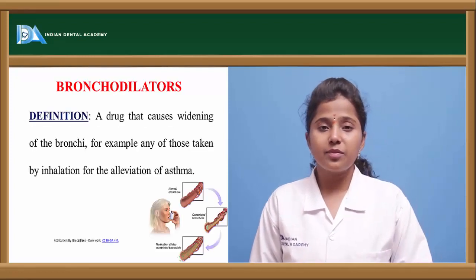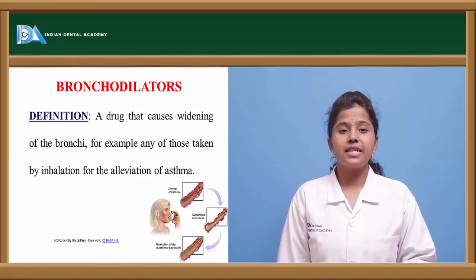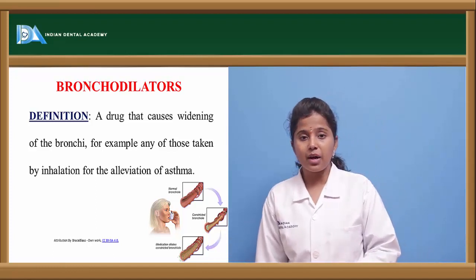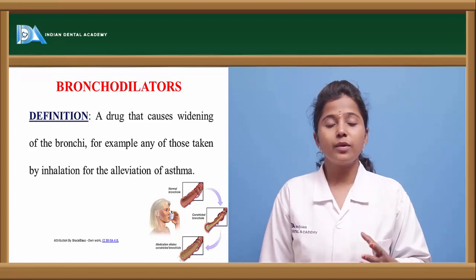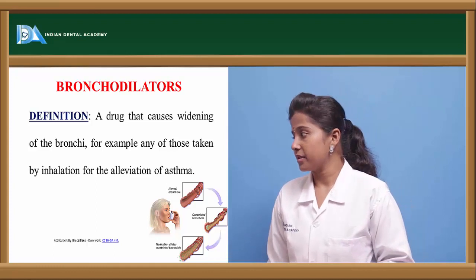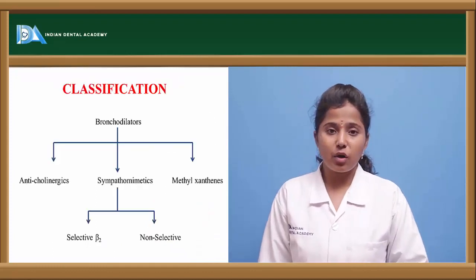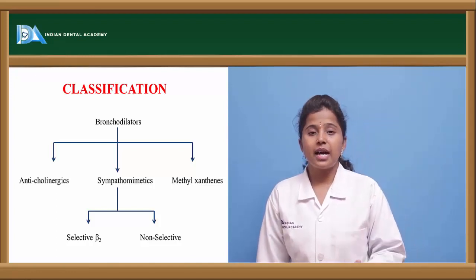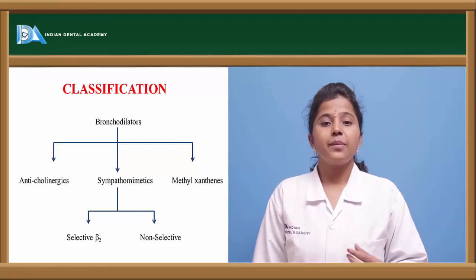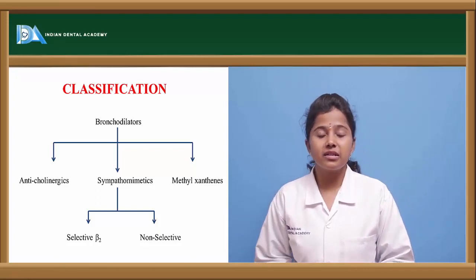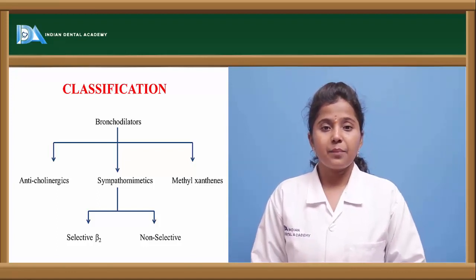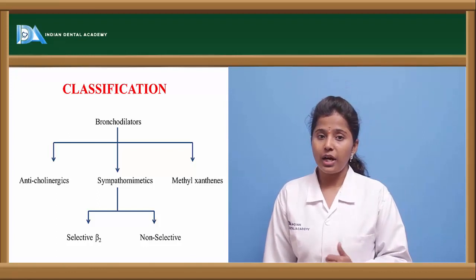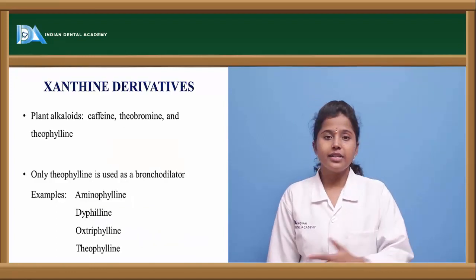Bronchodilators are the drugs which cause dilatation of the bronchial smooth muscle. These are the drugs usually recommended in asthma which, when administered, cause dilatation of the bronchial smooth muscle by various mechanisms. Bronchodilators are classified into three types: anticholinergic drugs, sympathomimetics, and xanthine derivatives. There are also miscellaneous drugs used in asthma. Sympathomimetics are further classified into non-selective adrenergic drugs and selective beta-2 adrenergic drugs.